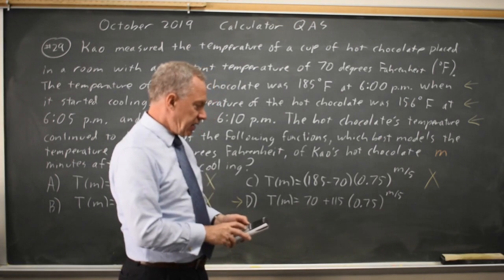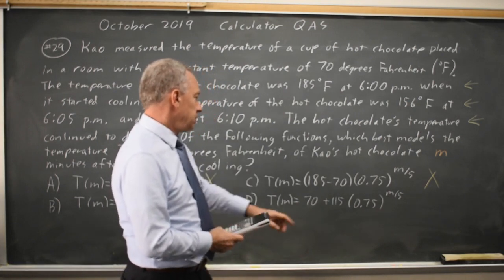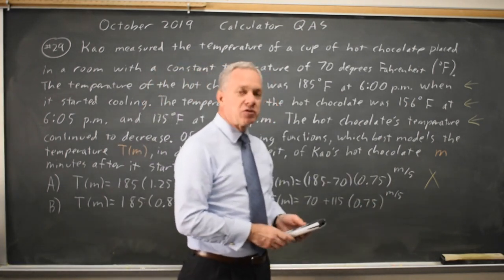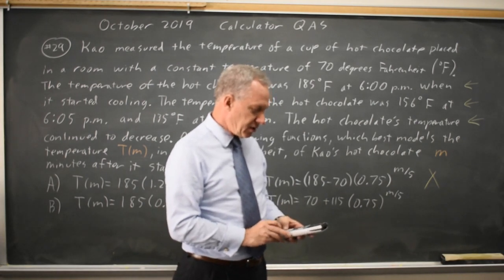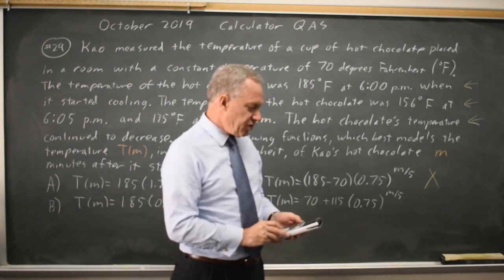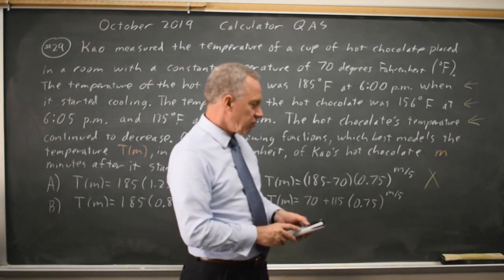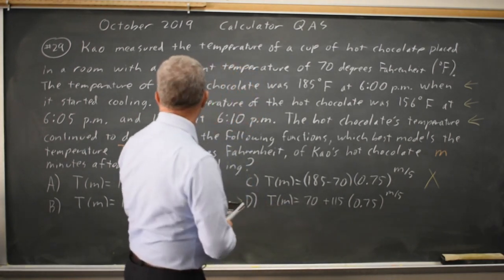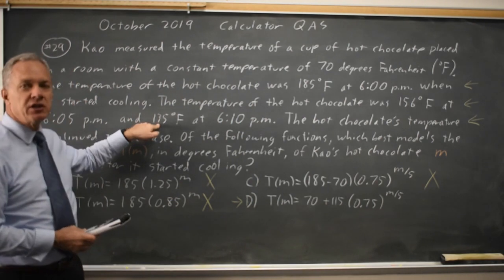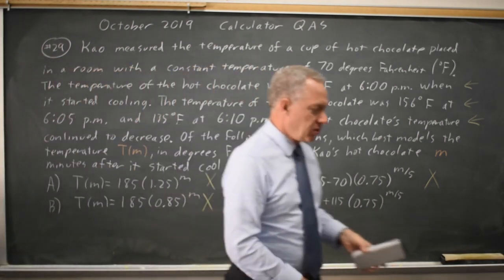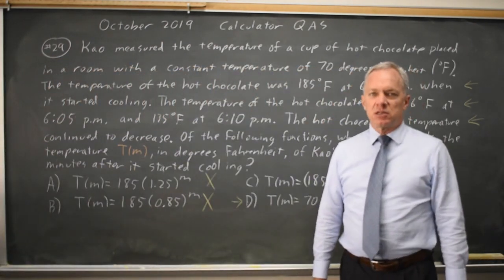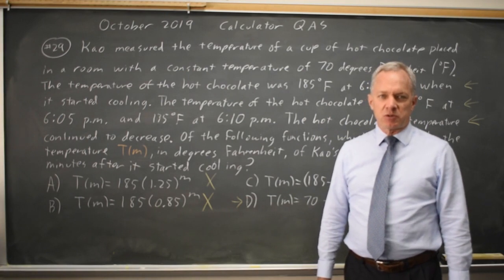And at m equals 10, 0.75 to the 10 over 5 is 0.75 squared. 115 times that plus 70 is 134.69, and we're supposed to get 135.